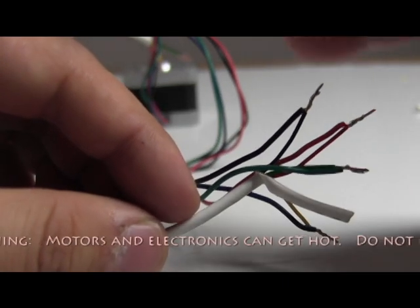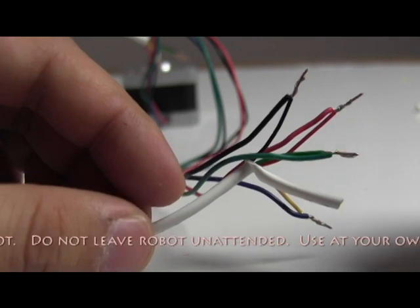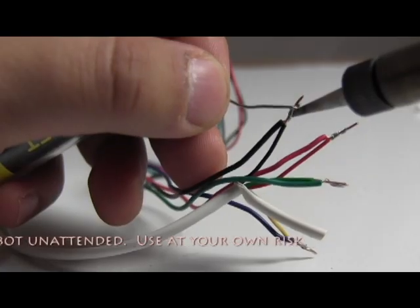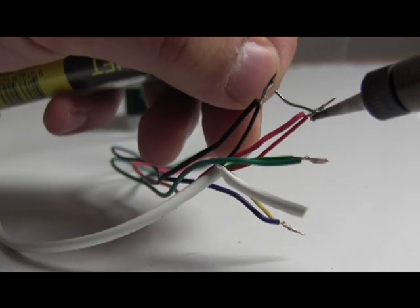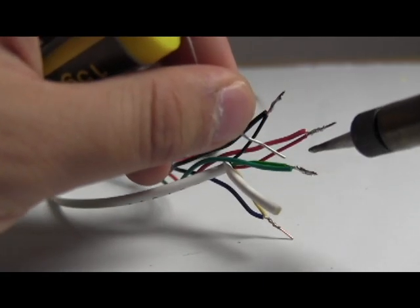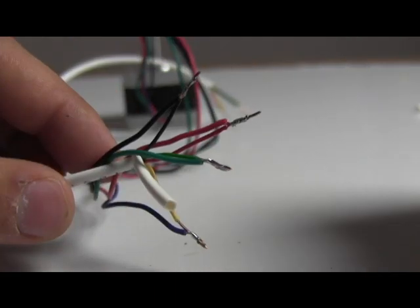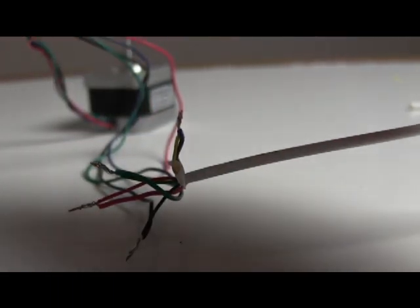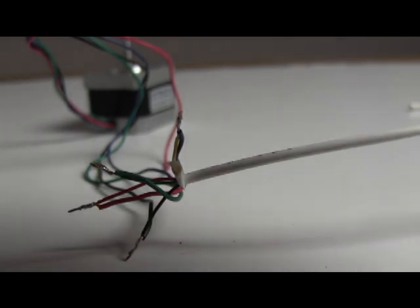And then I'm going to apply some solder here and then insulate it with electrical tape. There we go. So everything's all secure. Now I'm going to use some electrical tape to tidy this up and to make sure that the different wires don't touch each other.